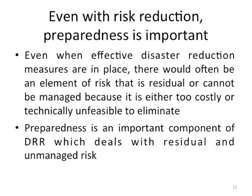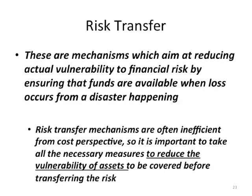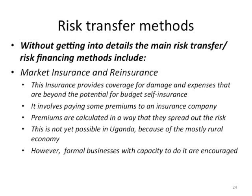Risk transfer mechanisms aim at reducing actual financial vulnerability in order to ensure that funds are available when loss occurs from a disaster. Risk transfer mechanisms are often inefficient from a cost perspective, so it is important to take all necessary measures to reduce the vulnerability of assets before transferring the risk. The main risk financing methods include market insurance and re-insurance, which provides coverage for damage and expenses beyond budget self-insurance capacity, with premiums spread to distribute risk — though this is not yet possible in many developing countries.